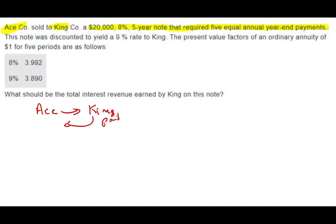Now what is this note? This note is a $20,000 note. So the face value of the note is $20,000. It will pay 8% for five years and five equal annual payments. So we're looking at an annuity, five equal payments at year end, it's an ordinary annuity. Now the note was discounted to yield 9% to King.